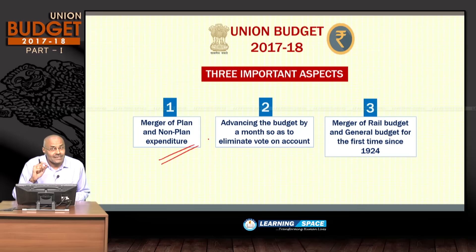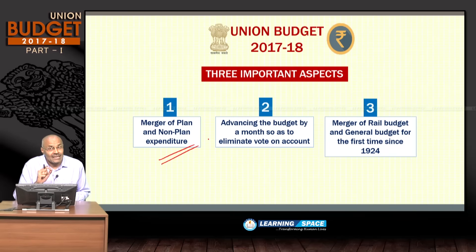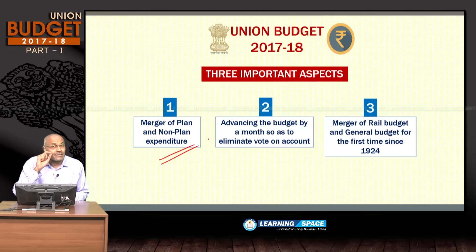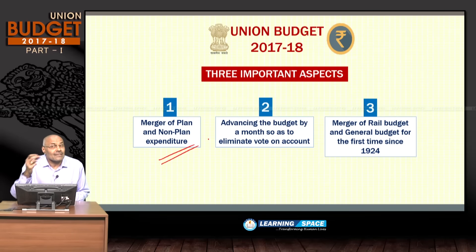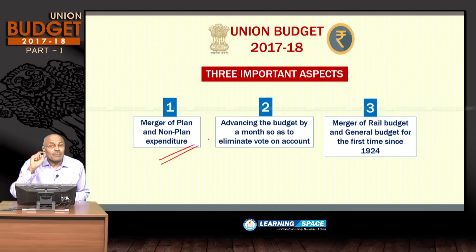The second point is that this year's budget was advanced by a month — from February 28th to February 1st — basically to eliminate the vote on account. The main purpose of presenting the budget one month in advance is to eliminate the vote on account, which gives authority to withdraw money from the Consolidated Fund of India. All budget proceedings will be completed by March 31, 2017.